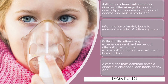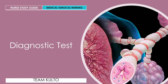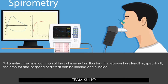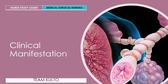Now, how are you going to diagnose asthma? The confirmatory test for asthma is spirometry. Spirometry is the most common of the pulmonary function tests — it measures lung function, specifically the amount and speed of air that can be inhaled and exhaled. Spirometry is helpful in assessing breathing patterns that identify conditions such as asthma, pulmonary fibrosis, cystic fibrosis, and other COPD cases.